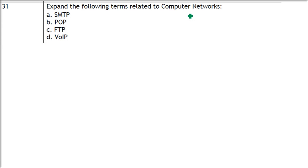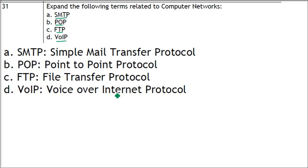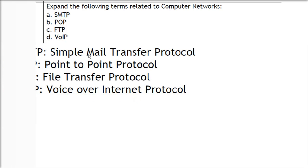Next, we have to expand — not explain — the following acronyms related to computer networks: SMTP stands for Simple Mail Transfer Protocol, POP stands for Post Office Protocol, FTP stands for File Transfer Protocol, and VoIP stands for Voice over Internet Protocol.